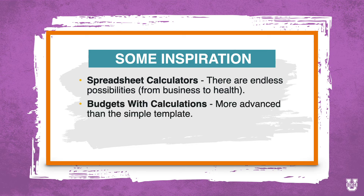The budget example we talked about — budgets with calculations. If you have something that will calculate out what they should be spending on certain things, it's a bit more advanced than just a template. But even if it's not doing complex calculations, if you have them put in their total money available to spend this month, and then as they fill in numbers it's taking money away — and it would go in the red if they're spending too much — that's a simple budget where it's more than a template. It's got built-in logic that's helping them do the work and see what they should be doing. That's another example of a tool.